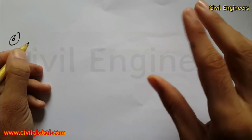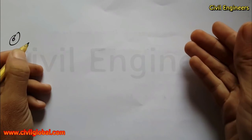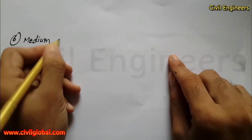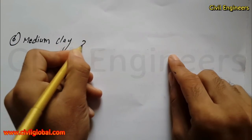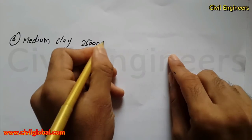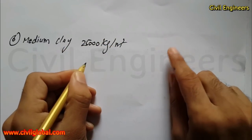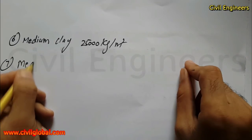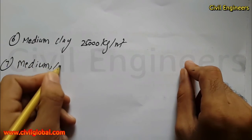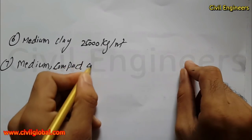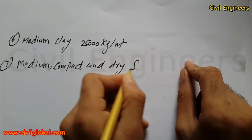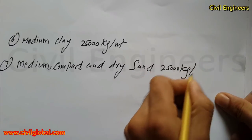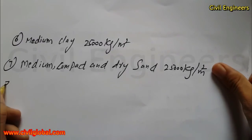The sixth type is medium clay, with a bearing capacity of 25,000 kg per meter square. The seventh type is medium compacted and dry sand, which also has a bearing capacity of 25,000 kg per meter square.